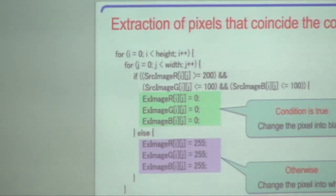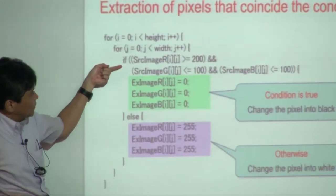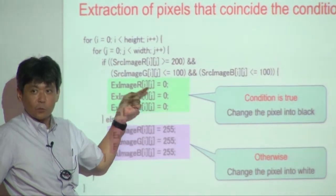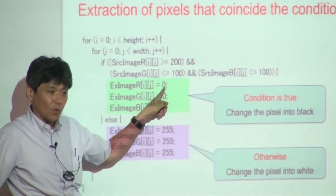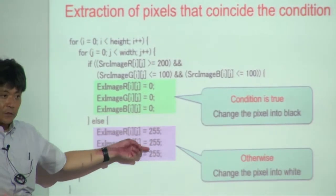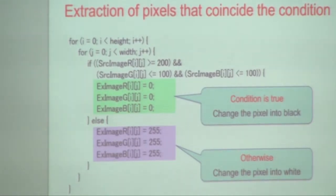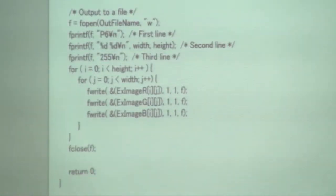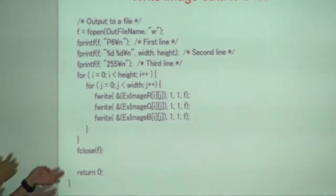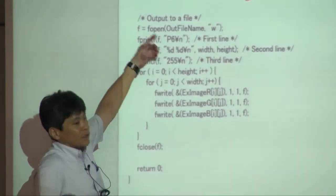If a red color pixel is found using the if-condition, that pixel is changed to black — meaning red, green, and blue values are all set to zero. Other pixels are changed to white — set to 255. Finally, you open the writing file using fopen.